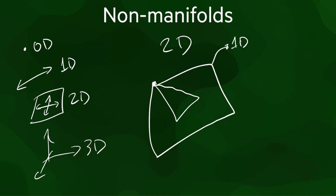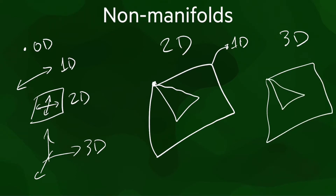You can tell that this is the case because if you are at the non-manifold vertex, there are four lines going in different directions. In 3D, where we want to represent 3D volumes using the 2D surface that bounds them, we can have the same non-manifold vertices, but we can also have non-manifold edges.